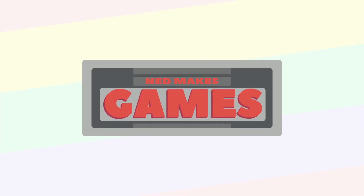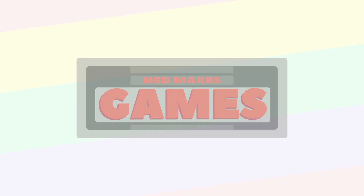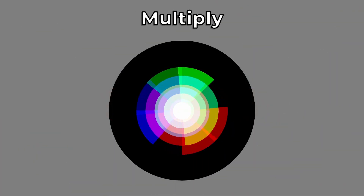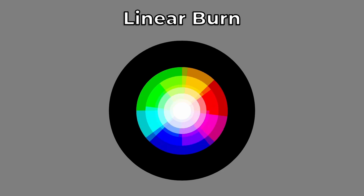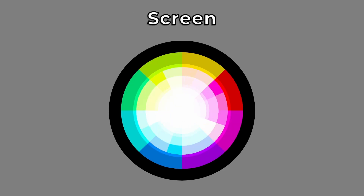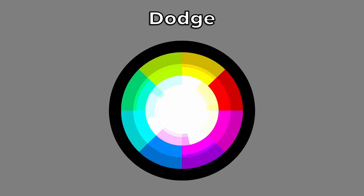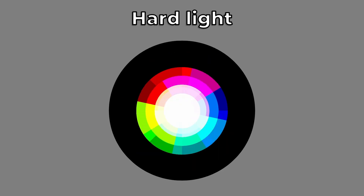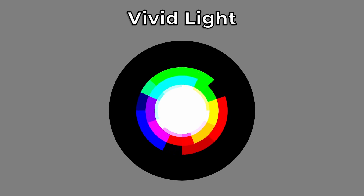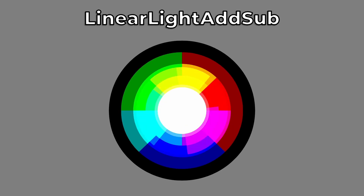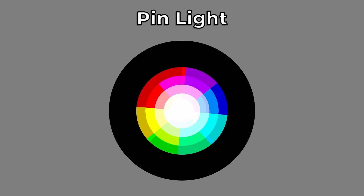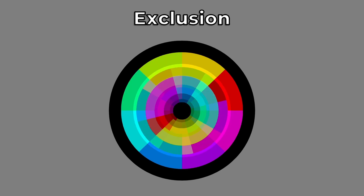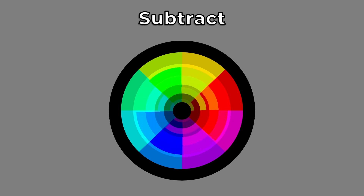Hi, I'm Ned and I make games. If you've worked with Unity's shader graph, you've likely used the blend node. However, did you know that it has 22 different modes? What do they do behind the scenes, and just how do they look in an actual shader? Keep watching to see what I found out.